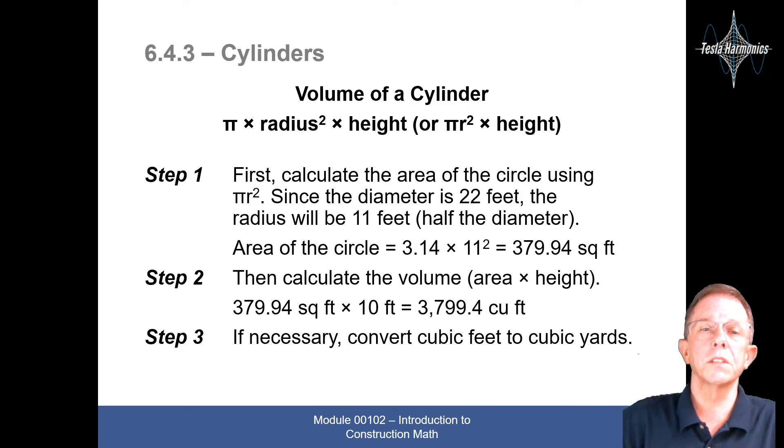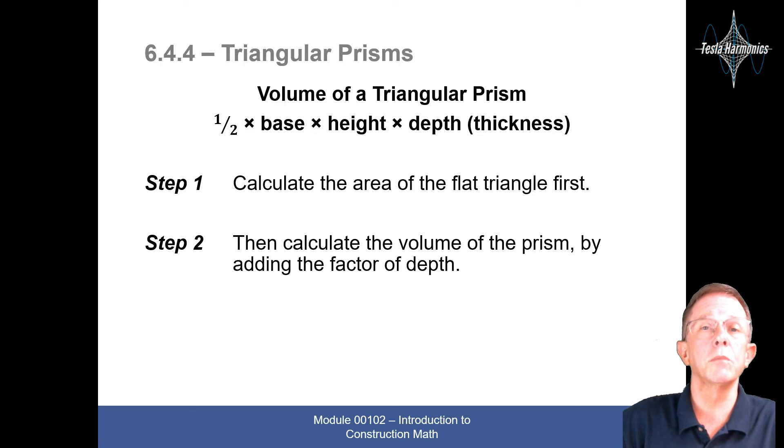Cylinders. The volume of the cylinder is pi times radius squared times height. First, calculate the area of the circle using pi times radius squared. Since the diameter is 22 feet, the radius will be 11 feet half the diameter. The area of a circle equals 3.14 times 11 squared equals 379.94 square feet. Then calculate the volume, area times height, 379.94 square feet times 10 feet equals 3,799.4 cubic feet. If necessary, convert cubic feet to cubic yards.